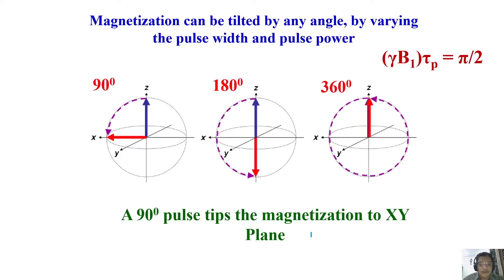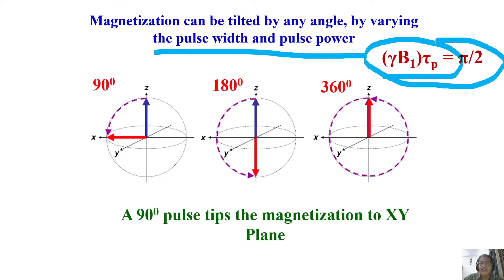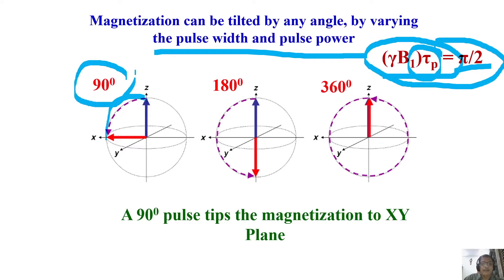Let us look at how magnetization is tilted by any angle by varying pulse width and pulse power. For a 90-degree pulse, you tilt the magnetization from the Z axis exactly to the X axis. The pulse width required — keeping power constant — to flip the magnetization from Z to X is called a 90-degree pulse. It is expressed in a few microseconds; the pulse width for a pi/2 flip angle is of the order of 5 to 10 microseconds for protons.